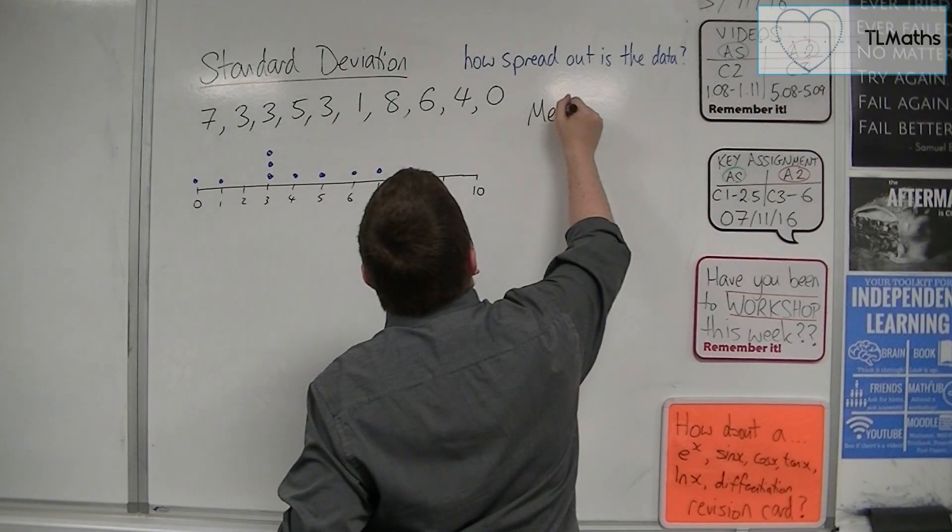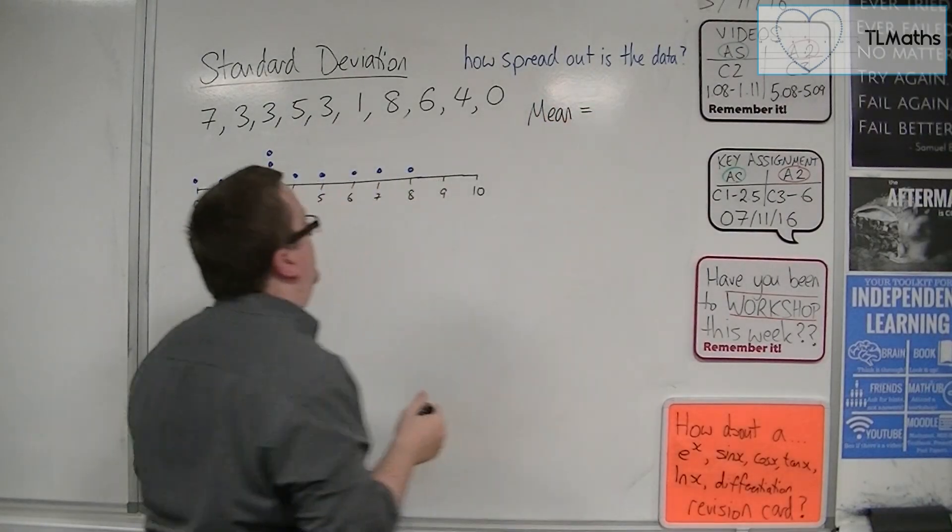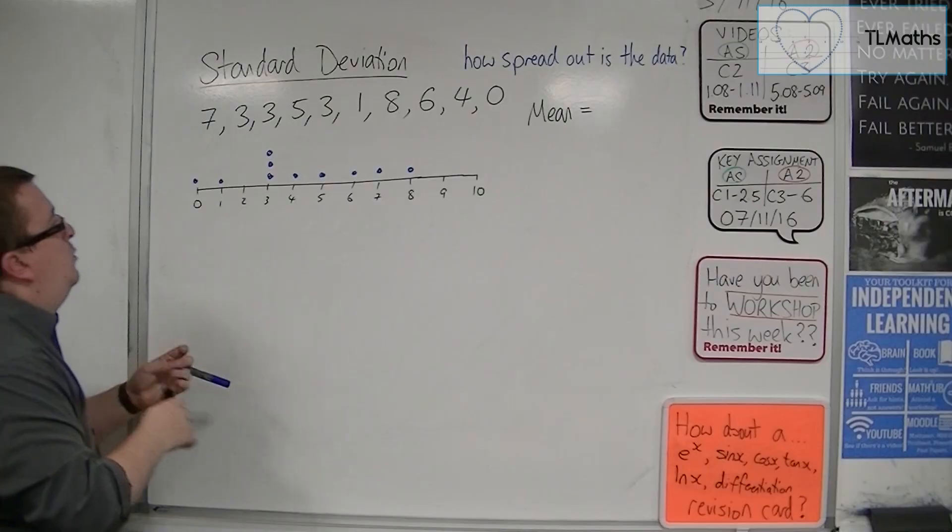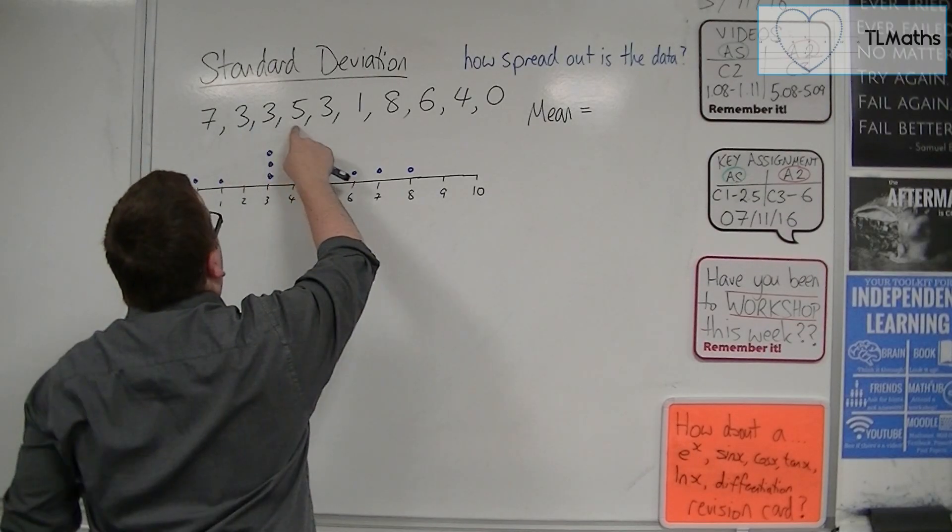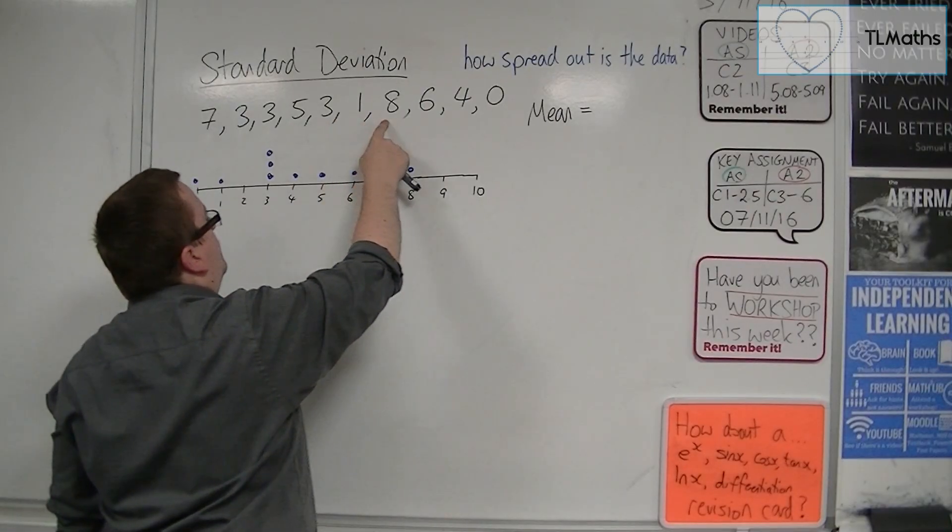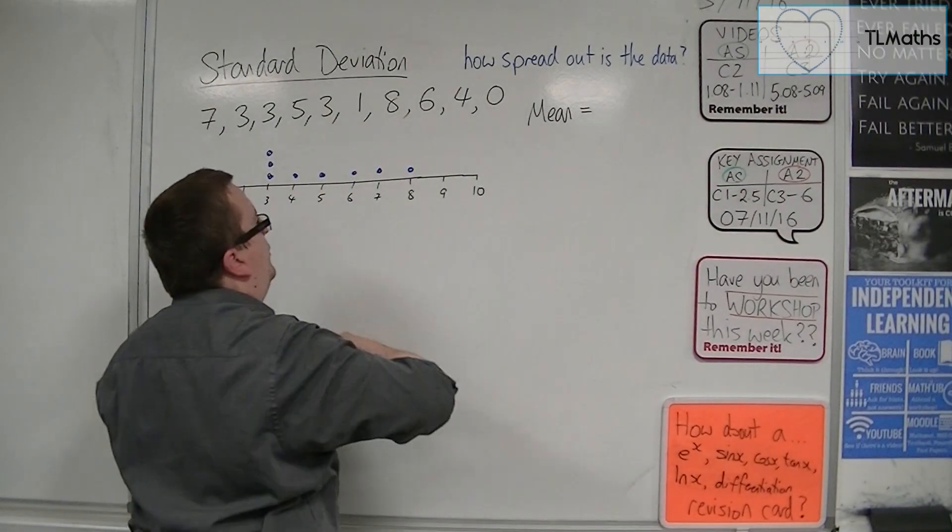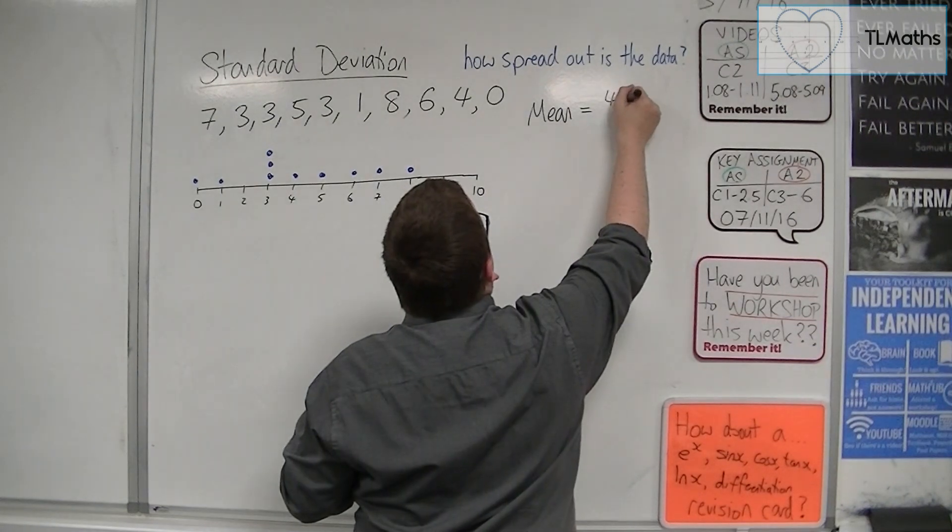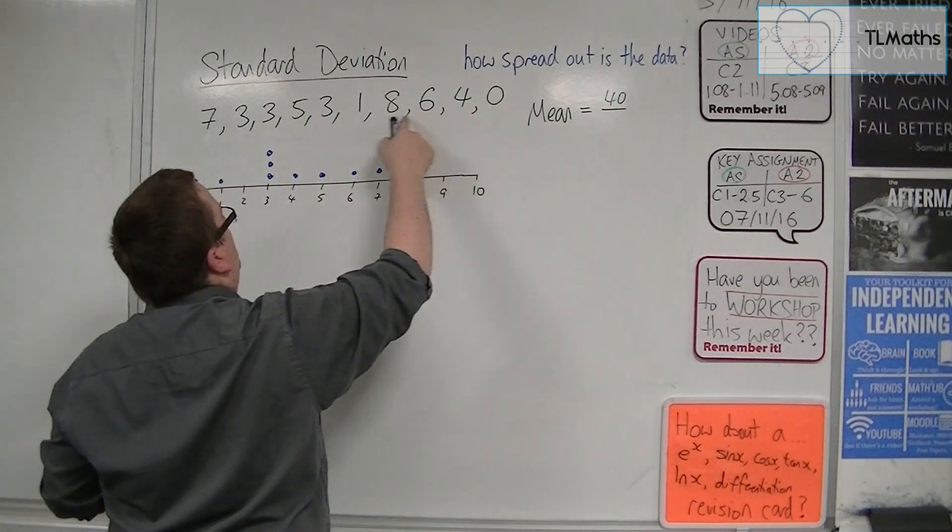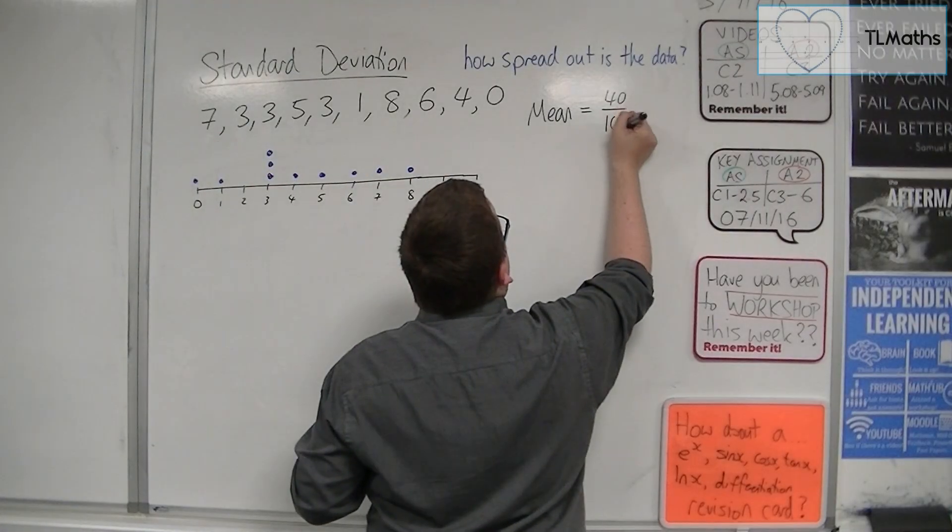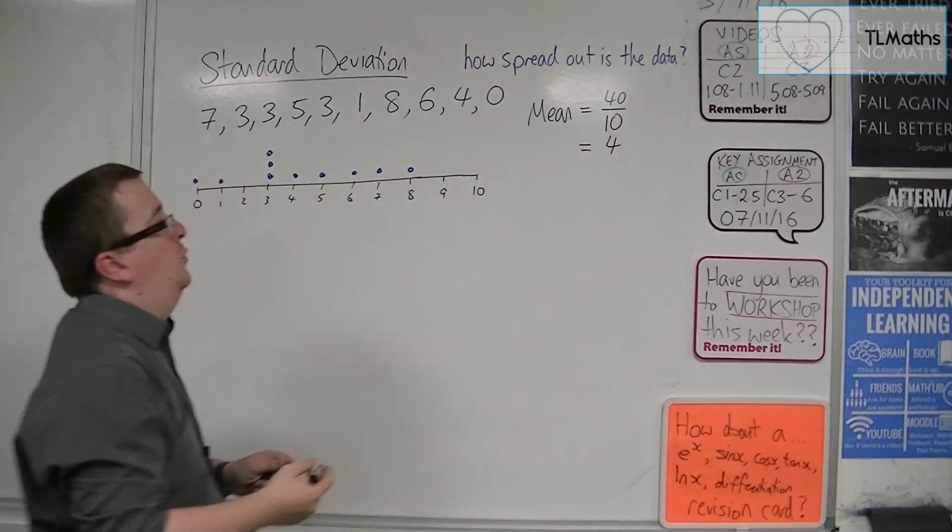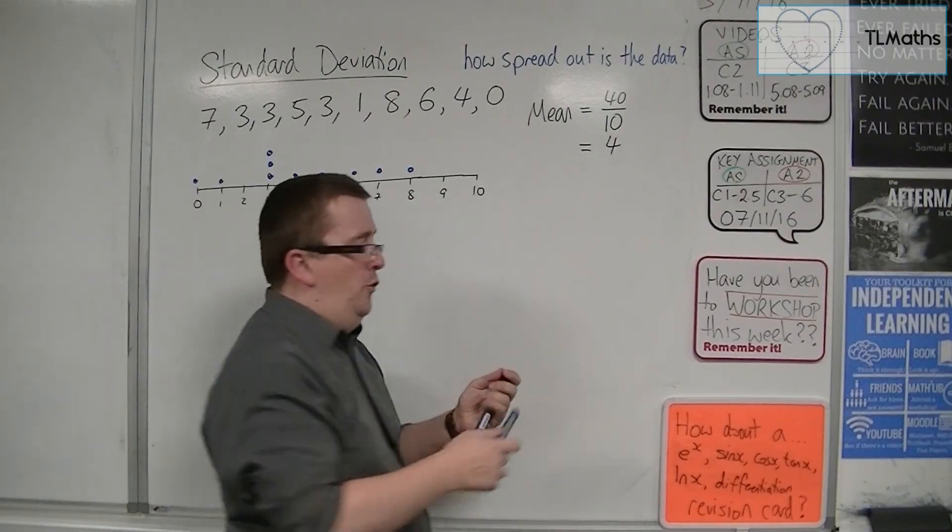So, it makes sense to find the mean. So let's do that. The mean is equal to, well, I'm going to have to add them all up, divide by how many there are. So I've got 7 and 3, that's 10, 13, 18, 21, 22, 30, 36, 40. So it's 40, and there's 1, 2, 3, 4, 5, 6, 7, 8, 9, 10 numbers. Okay, brilliant. So 40 divided by 10 is 4. So the mean is 4.